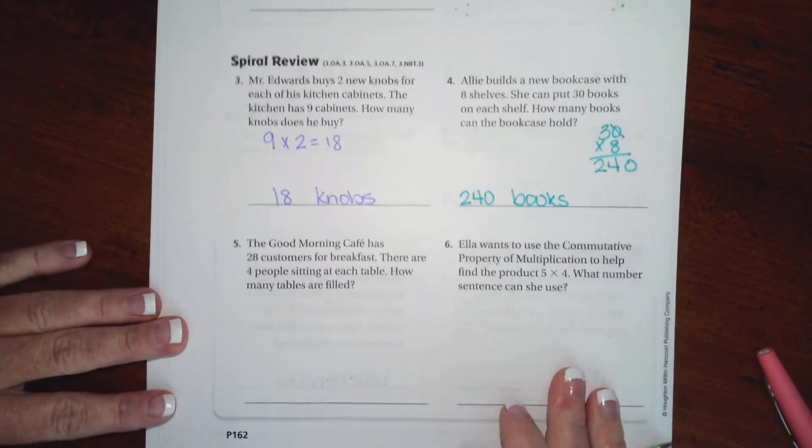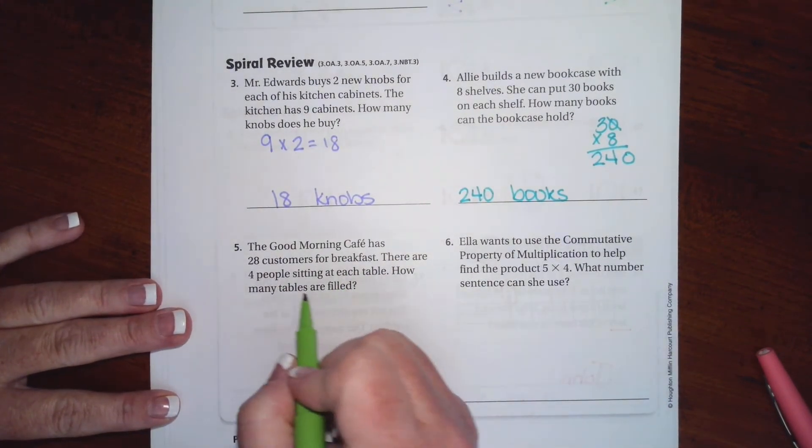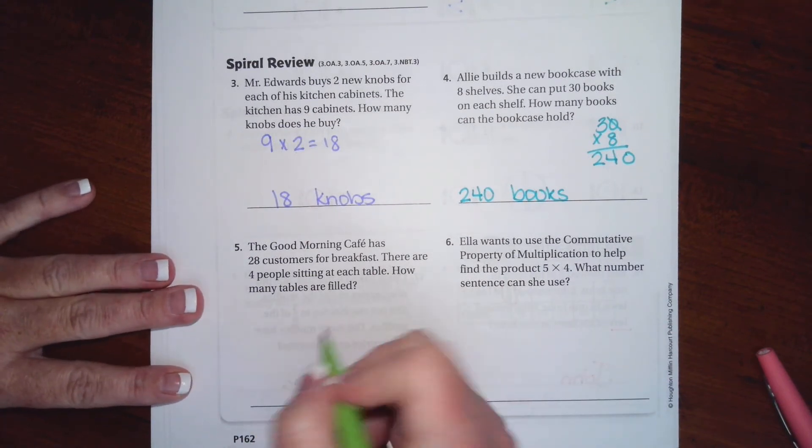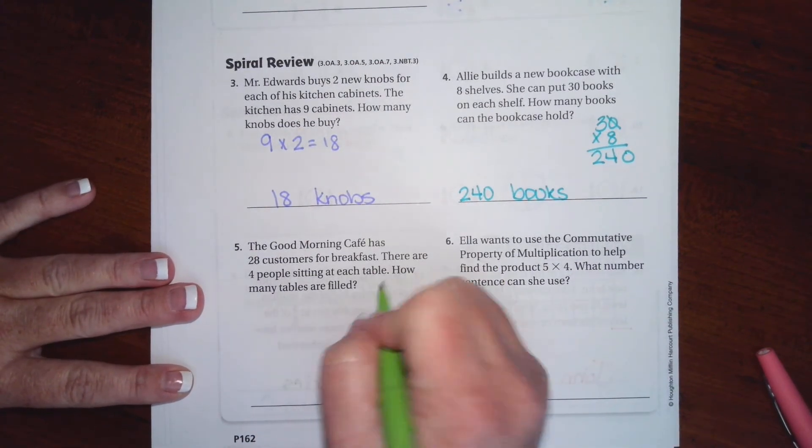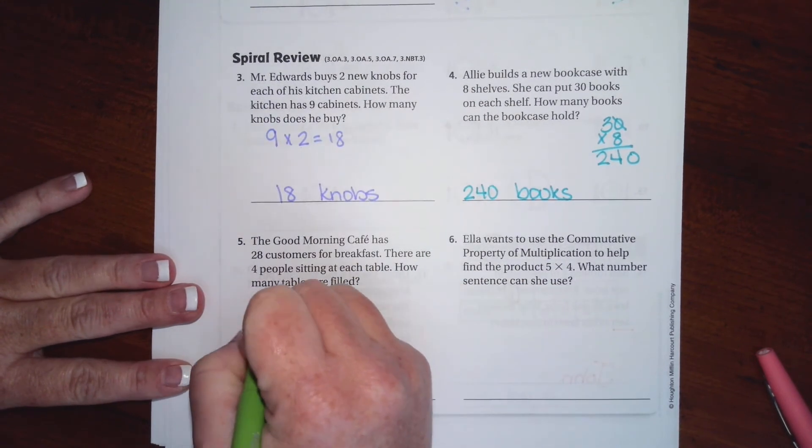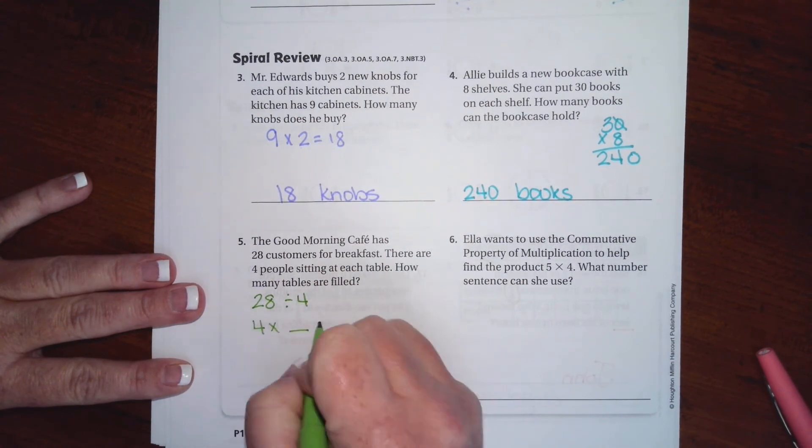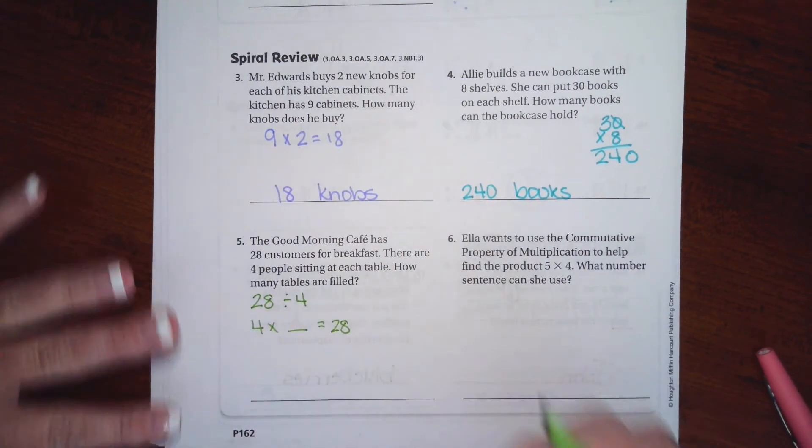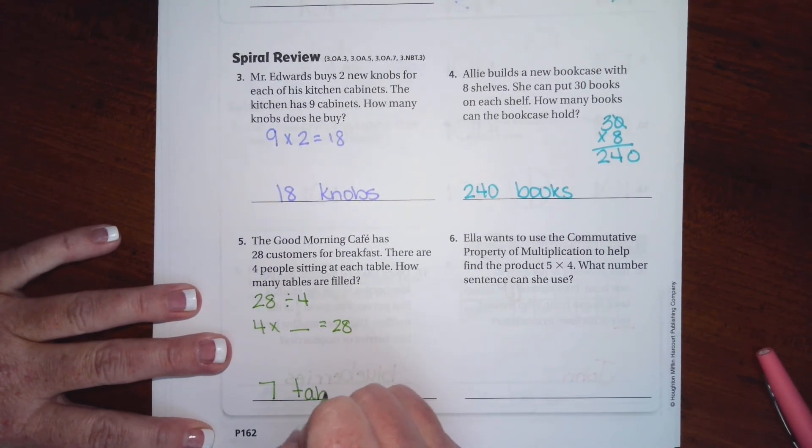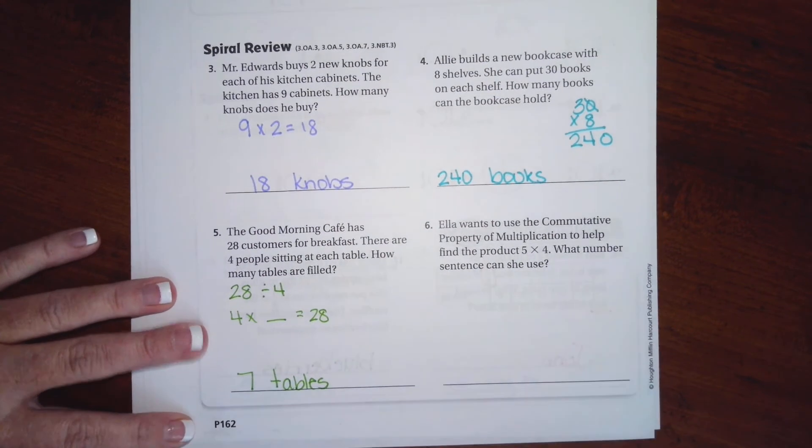All right, the Good Morning Cafe has 28 customers for breakfast. There are four people sitting at each table. How many tables are filled? All right, so 28 divided by four, or four times blank is 28. Well, I know that four times seven is 28. If you do not know your multiplication facts, you need to get on that.